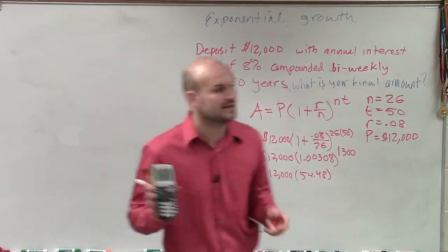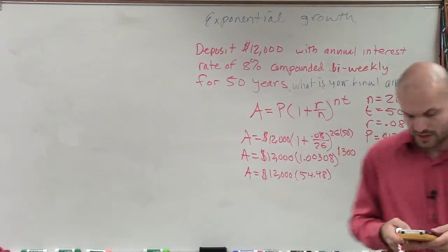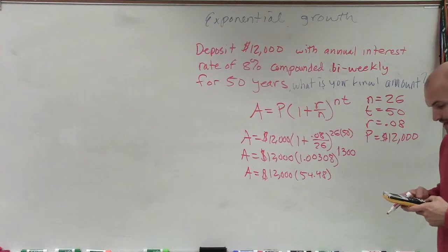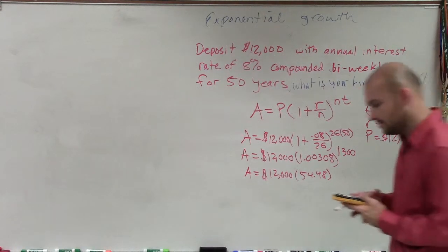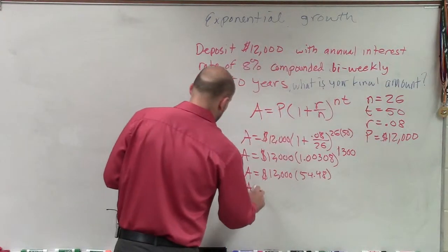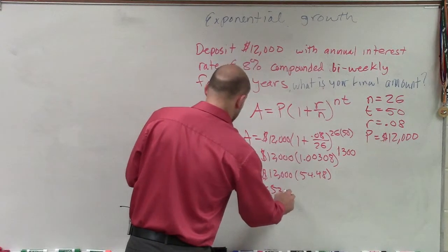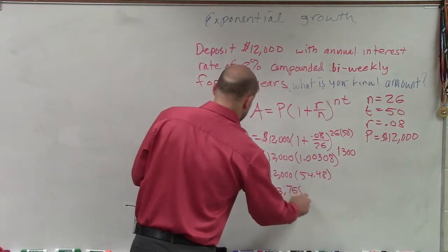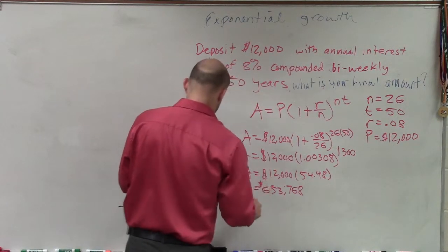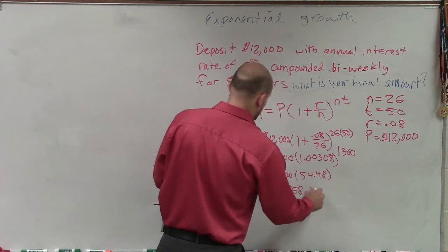And I get A equals 12,000 times 54.48. And again, I'm rounding. You're going to want to use as many clear cut values as you can in your calculator. And then just multiply that by 12,000. So A equals $653,768.37.